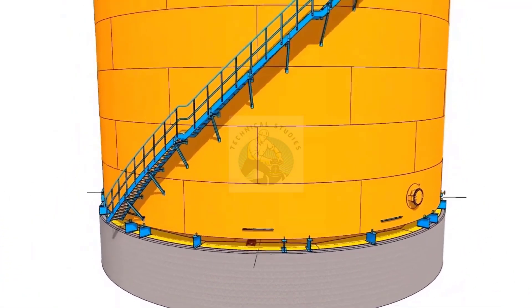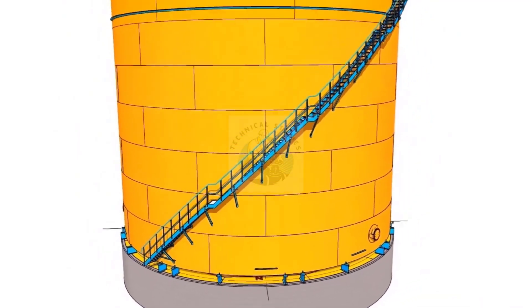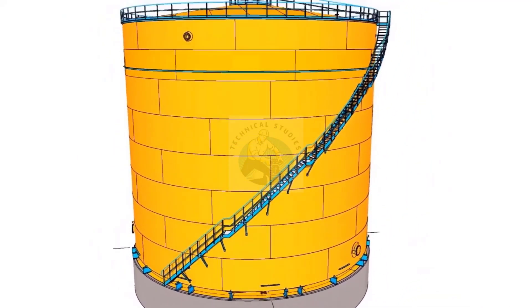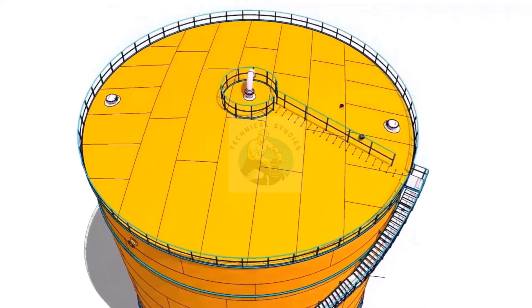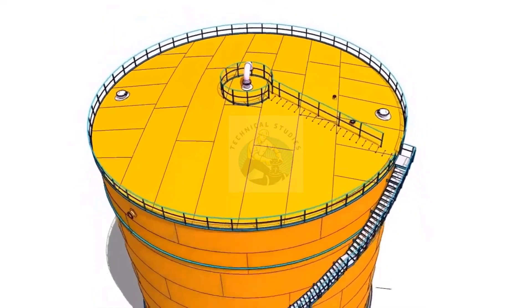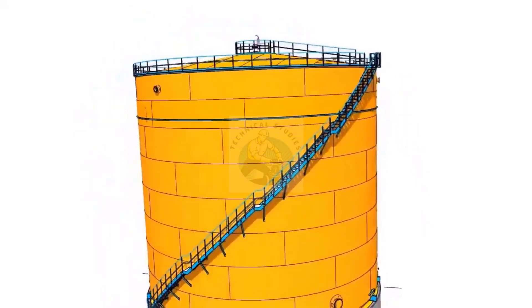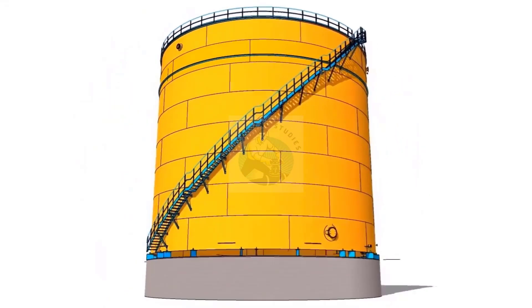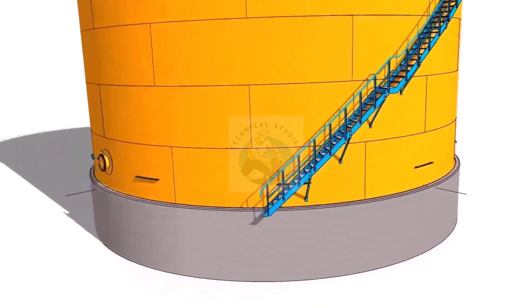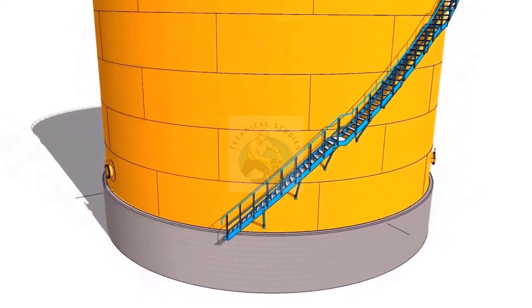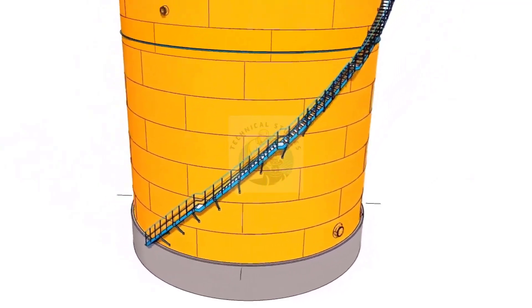Lower the tank on the annular plate. Fit up the annular plate to the shell. After completing the welding of this joint, fit up and weld the annular plate to the bottom joint.